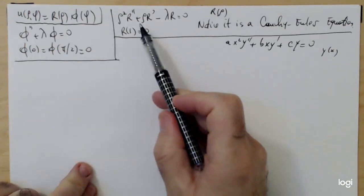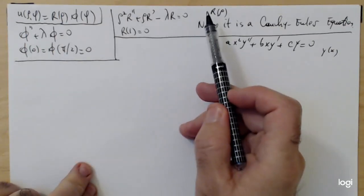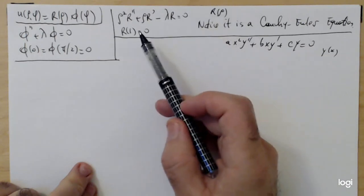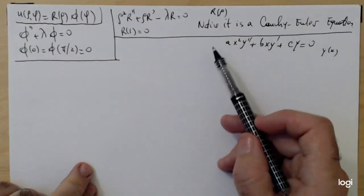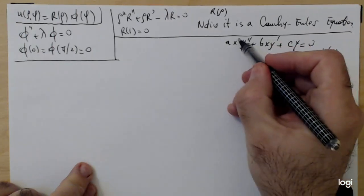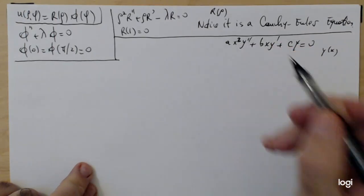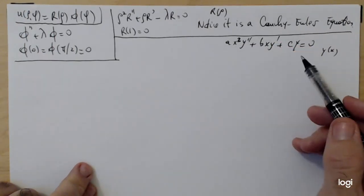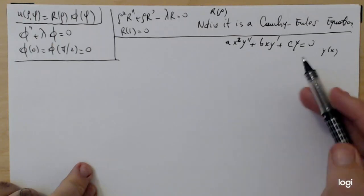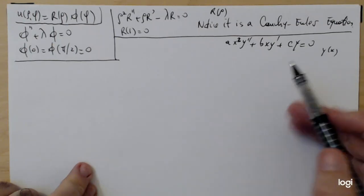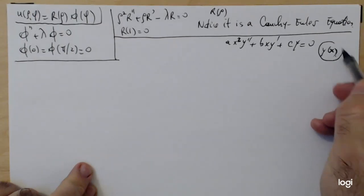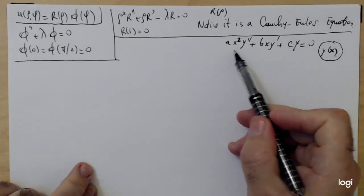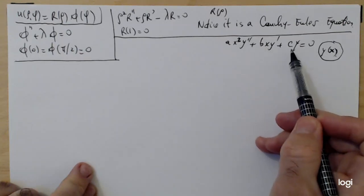Notice that the equation in R is a Cauchy-Euler type. If it's not obvious, look at the generic form of the Cauchy-Euler equation that we discussed in the previous lecture, because you have to be careful to adapt yourself to different notations. In that standard form, we denoted the dependent variable by y, y as a function of x.